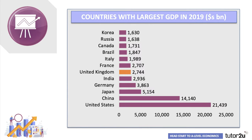Here's the data for 2019, expressed at market exchange rates converted into US dollars. We find the United States ahead, with China second and Japan third, Germany in fourth place. India has overtaken the UK to become the fifth biggest economy in the world. The UK is now the sixth biggest economy, just keeping ahead of France. South Korea has now broken into the top 12 countries in the world.